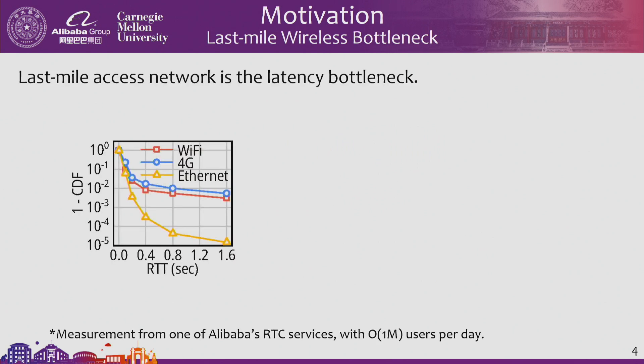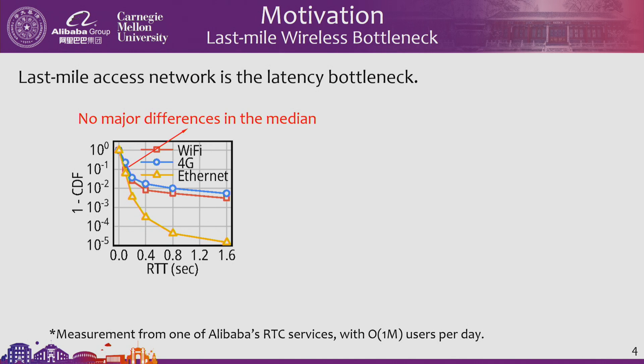We want to see where the bottleneck of tail latency really is. We collaborated with Alibaba to measure an online RTC service in production. The x-axis shows network round-trip time and the y-axis is the complementary CDF, categorized by internet, Wi-Fi, and 4G. Wired and wireless connections do not differ much at medium percentiles. However, wireless connections are two orders of magnitude more likely to have higher RTT in the tail percentiles.